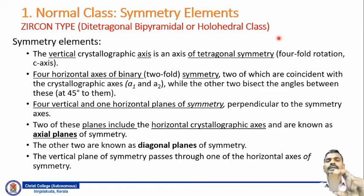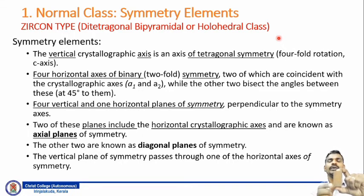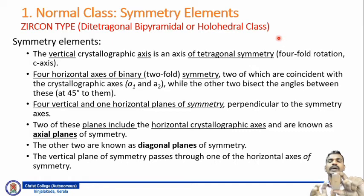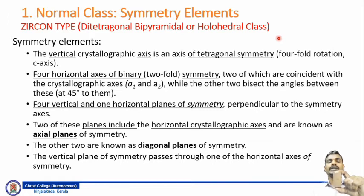Now I will show you the symmetry elements on this crystal model. The first symmetry element is the one vertical axis of four-fold symmetry. I orient the crystal with the c-axis being the longest one and rotate the crystal 360 degrees. You can see how many times the similar faces repeat — one, two, three, four. If you rotate again, you reach the former face. This confirms the crystal is characterized by one vertical axis of four-fold, i.e., tetragonal symmetry with respect to the c-axis.